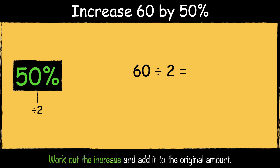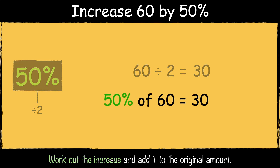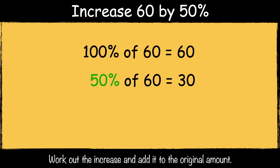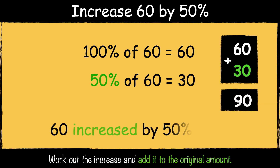Here's the next example: increase 60 by 50%. To find 50% of a number we divide it by 2. 60 divided by 2 is 30, so 50% of 60 is 30. The next step is to add it to the original amount, so 60 add 30 is 90. So 60 increased by 50% is 90.